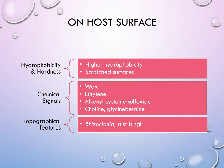The second important stimulus on the host surface is the chemical signal. Several chemicals released from the host plant stimulate germination or extension of the hypha. These chemicals can be waxes — a source of nutrients — or ethylene, which is a ripening hormone, or alkanyl cysteine sulfoxide, or choline glycine betaine. All of these are compounds responsible for stimulation of fungal spores or bacterial cells when they fall on a host surface.